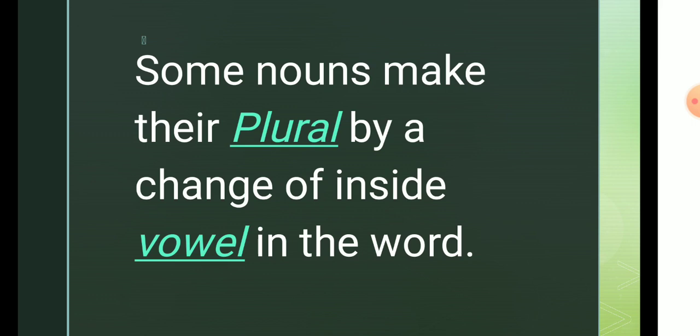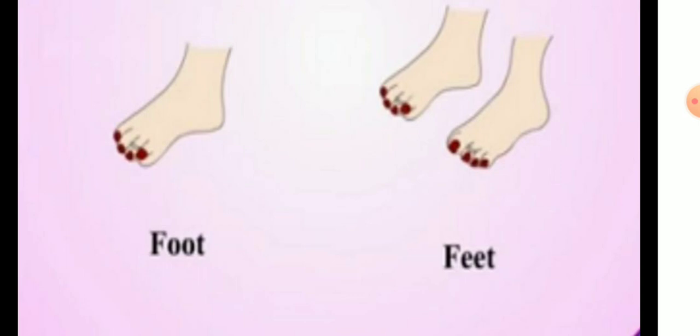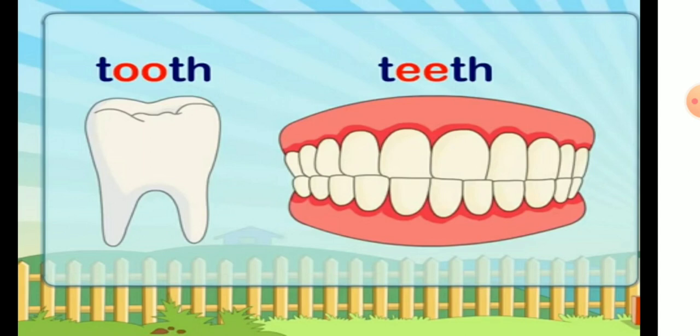Some nouns make their plural by a change of the inside vowel in the word. For example, 'man' — when we change it into plural form, we replace 'a' with 'e', giving us 'men' (M-E-N). Other examples: 'foot' → 'feet'; 'tooth' → 'teeth'.